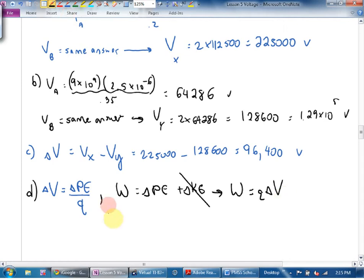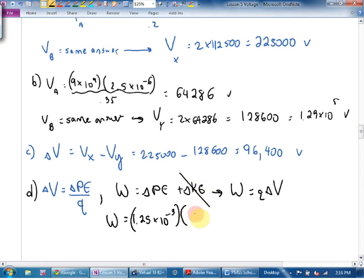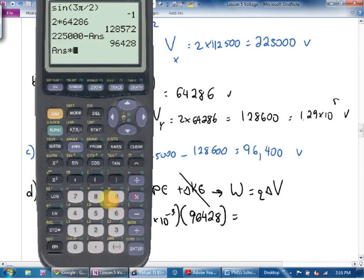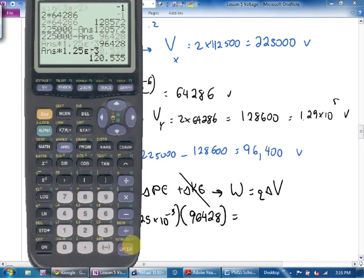In our case, how big a charge are we moving? What does part D say? Millie or micro? Millie? How many volts are we moving through? 96,428. How much work?